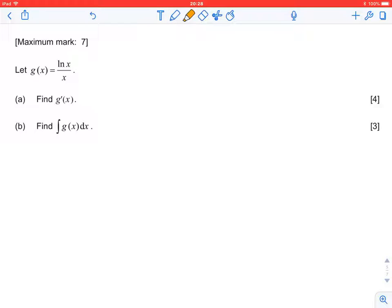Hey everybody, this is IB Math SL question number four from the paper one timezone two exam from 2015. The question gives us a function g(x) equals ln(x) over x. It's pretty straightforward. We're just asked to find the derivative in part a and we're asked to find the antiderivative in part b.